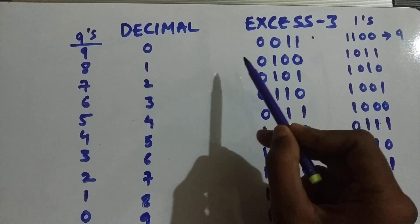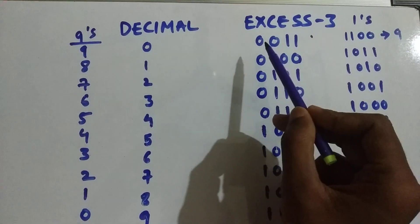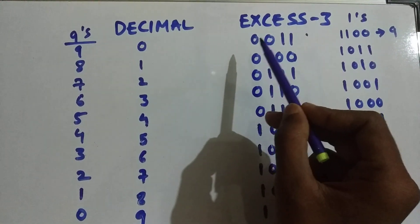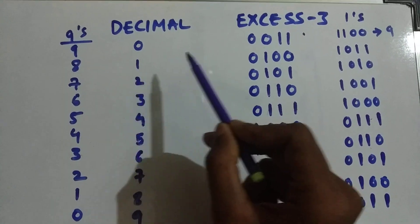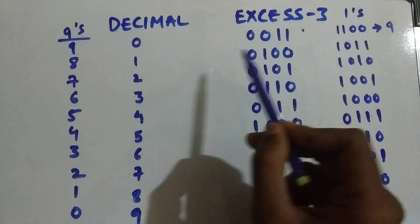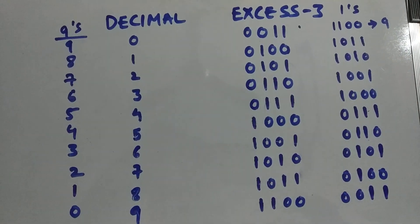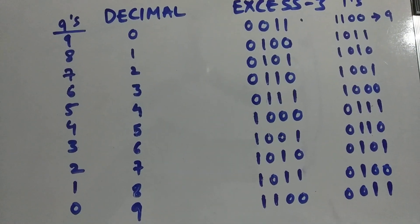0 is represented as 0011, that is 3 in normal binary decimal. But in Excess-3, it is represented as 0011. 1 is represented as 0100. 2 is represented as 0101. To find out if it's self-complementing or not,